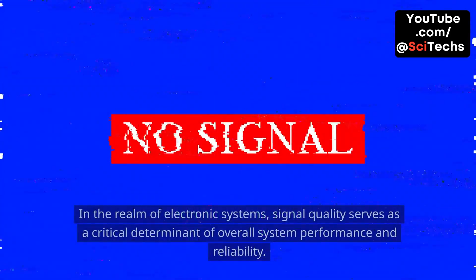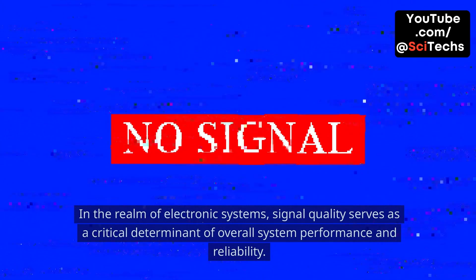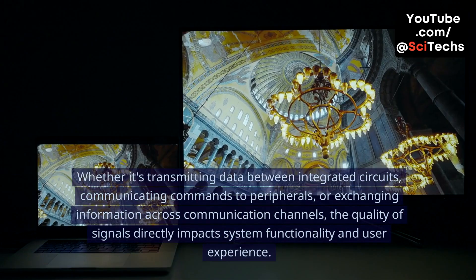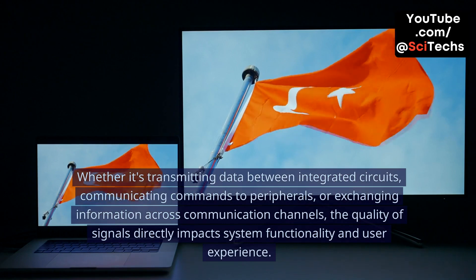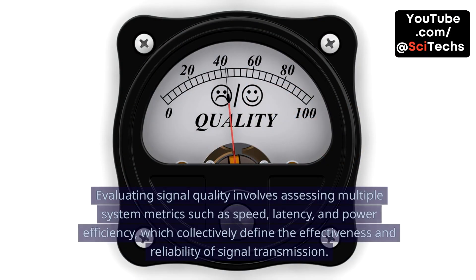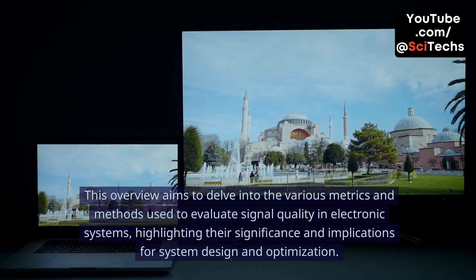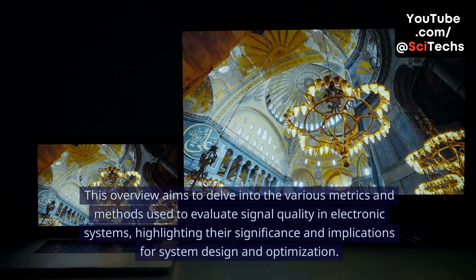Introduction. In the realm of electronic systems, signal quality serves as a critical determinant of overall system performance and reliability. Whether it's transmitting data between integrated circuits, communicating commands to peripherals, or exchanging information across communication channels, the quality of signals directly impacts system functionality and user experience. Evaluating signal quality involves assessing multiple system metrics such as speed, latency, and power efficiency, which collectively define the effectiveness and reliability of signal transmission. This overview aims to delve into the various metrics and methods used to evaluate signal quality in electronic systems, highlighting their significance and implications for system design and optimization.